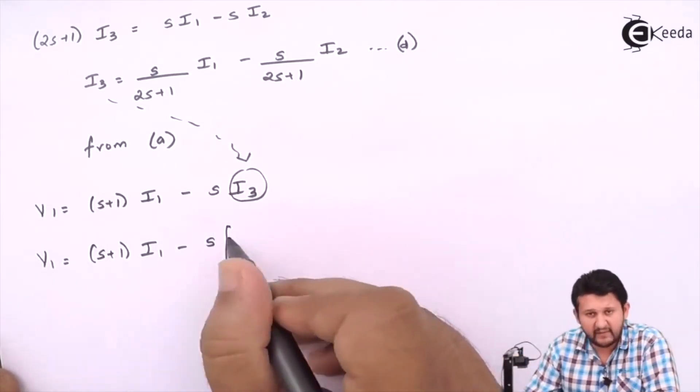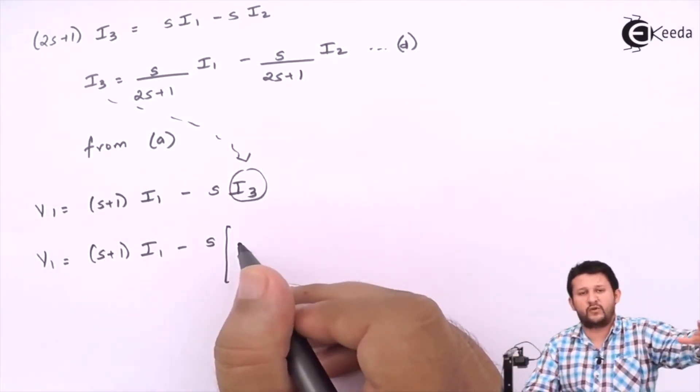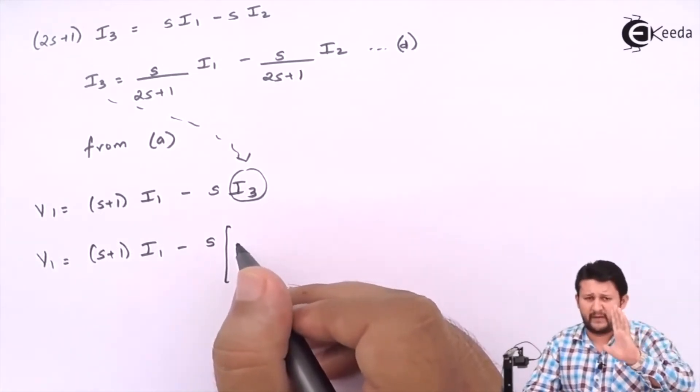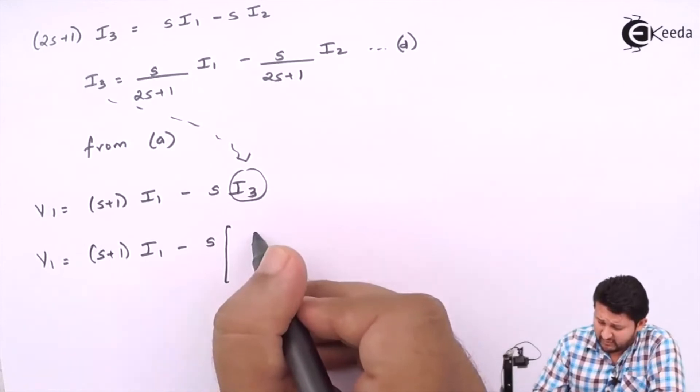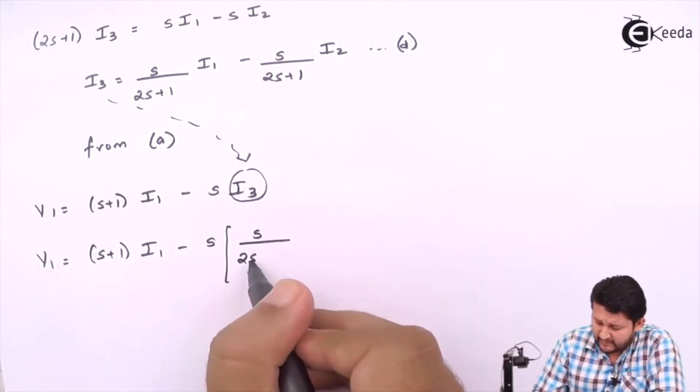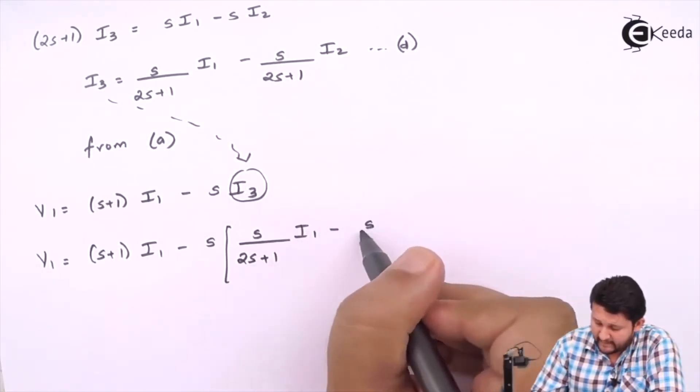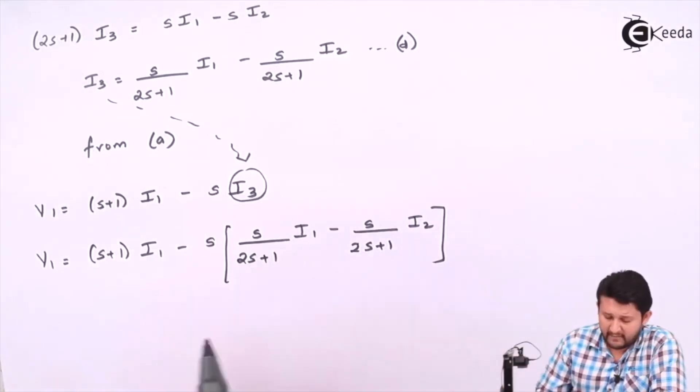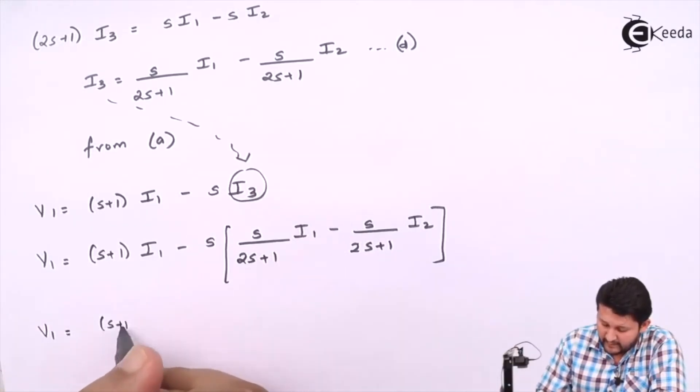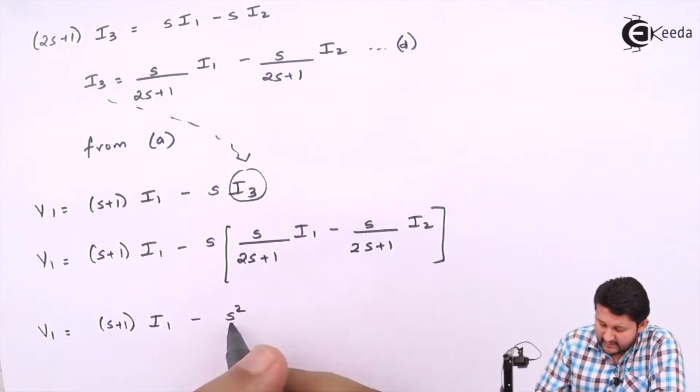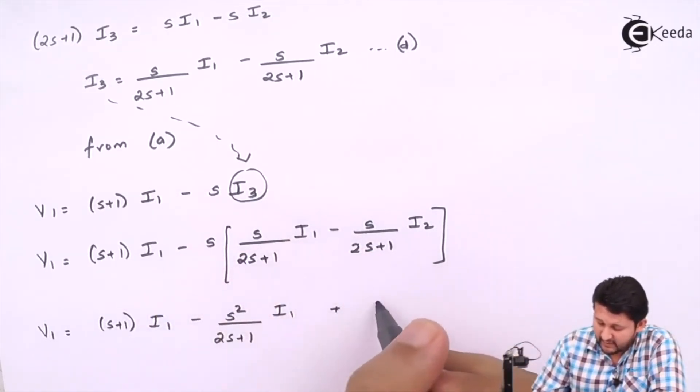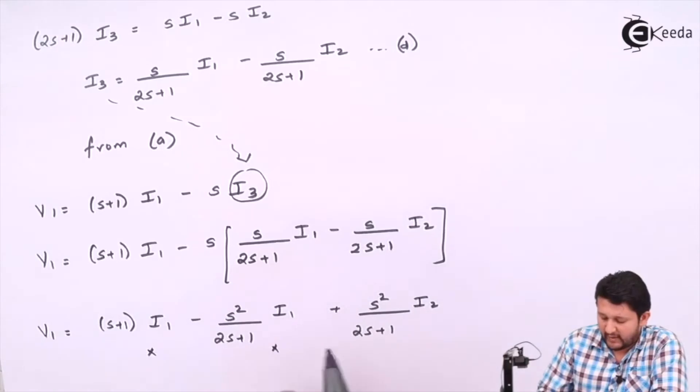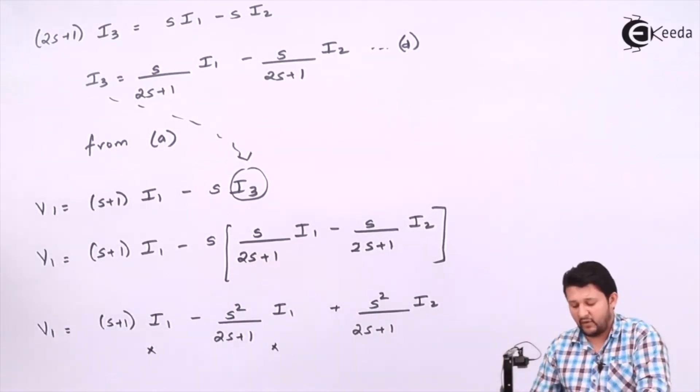So your V1 which you get is (s+1)I1 minus s times [the expression in brackets]. The bracket is important because this term cannot multiply with only the first term—it has to be multiplied with both terms. Normally students don't take a bracket and marks go down. So we need to be very careful with brackets. So the values of I3 would be s/(2s+1)I1 minus s/(2s+1)I2.